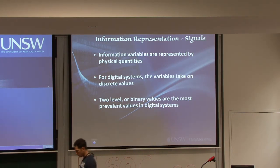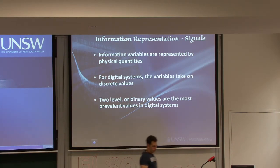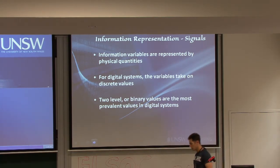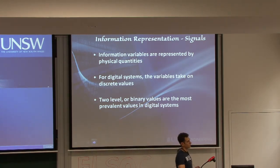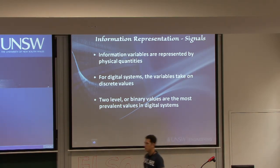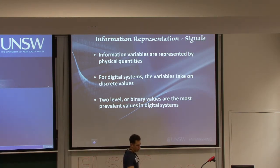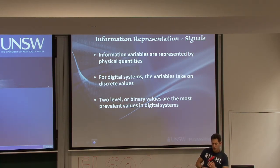How do we actually control digital systems? In the real world, we have physical signals we can measure — things like temperature, weight in kilograms, lengths, volumes, pressures. They all have their measuring units, and all of them are continuous physical quantities.